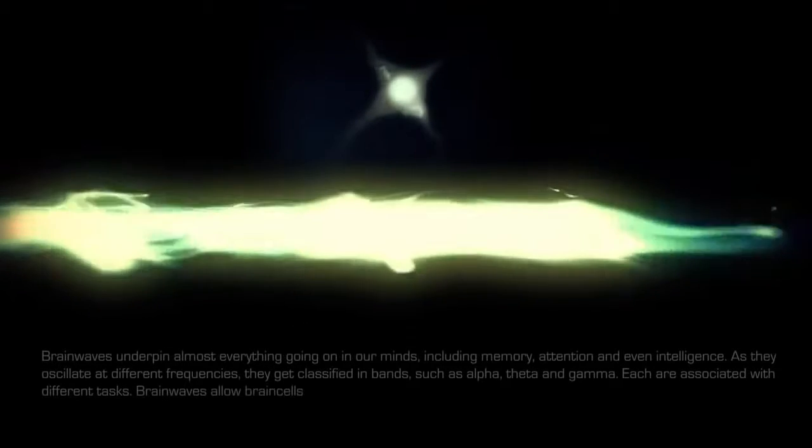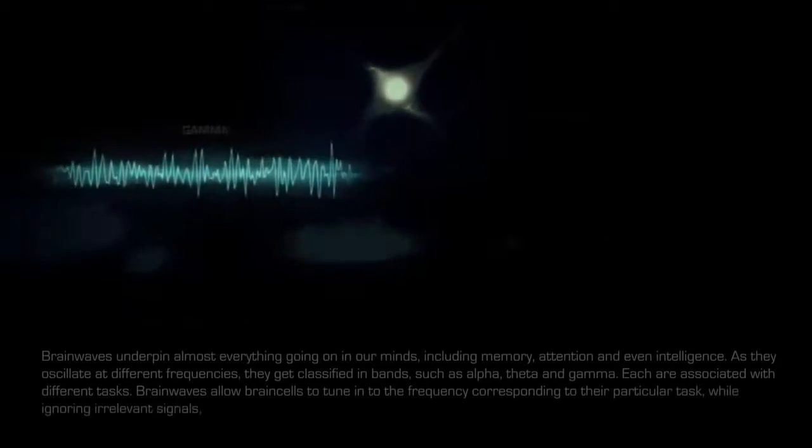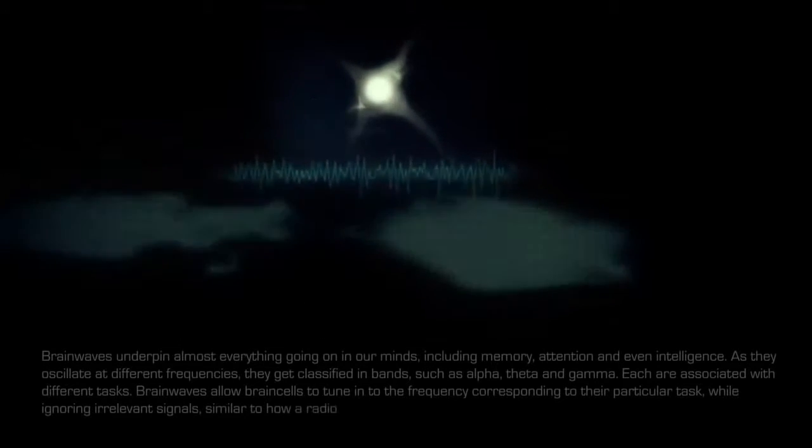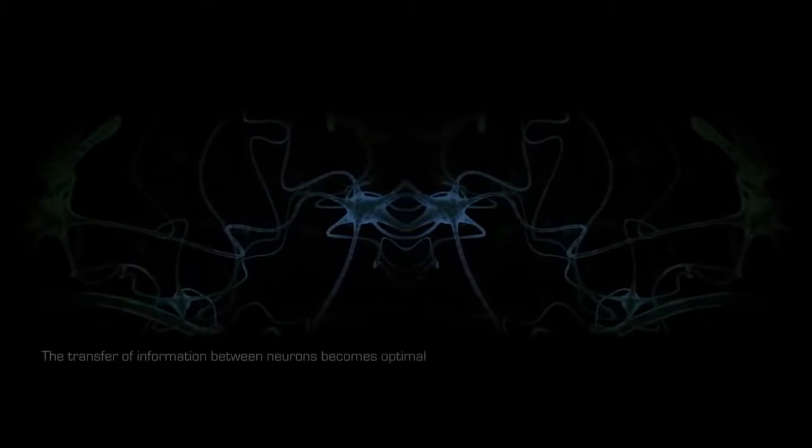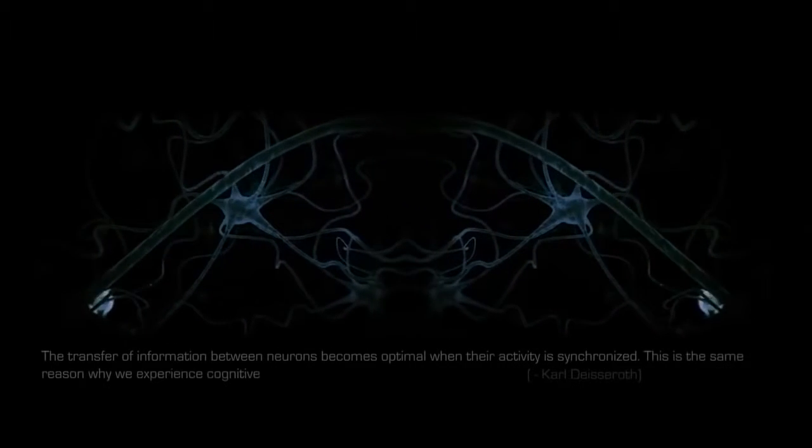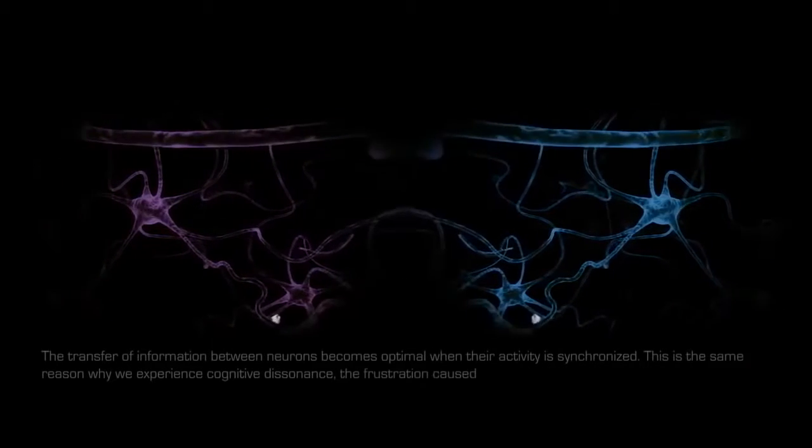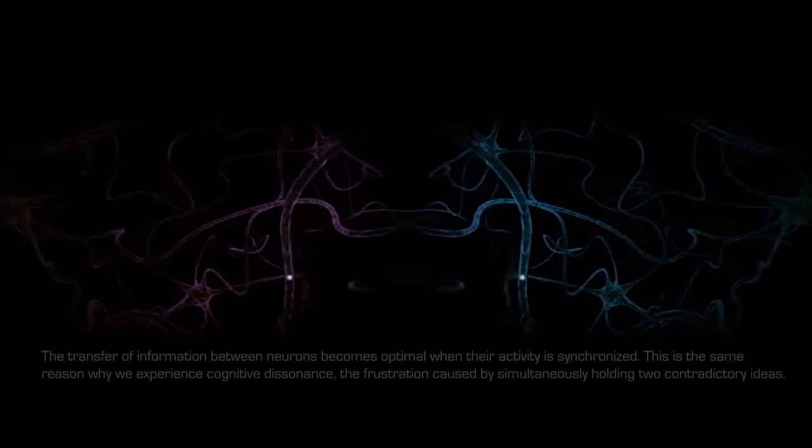Brain waves allow brain cells to tune into the frequency corresponding to their particular task, while ignoring irrelevant signals, similar to how a radio homes in on different waves to pick up radio stations. The transfer of information between neurons becomes optimal when their activity is synchronized. This is the same reason why we experience cognitive dissonance, the frustration caused by simultaneously holding two contradictory ideas.